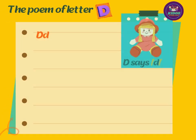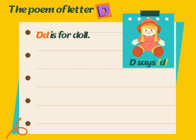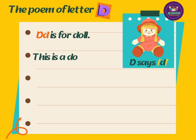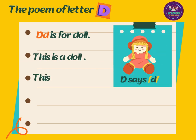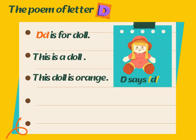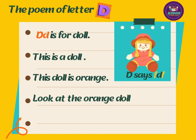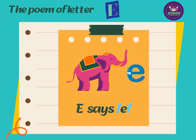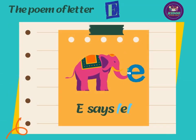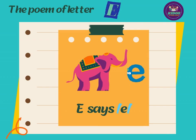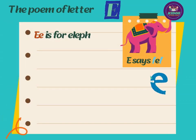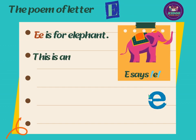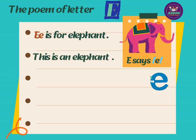D is for doll. This is a doll. This doll is orange. Look at the orange doll. The orange doll is cute. The poem of letter E. E says E.